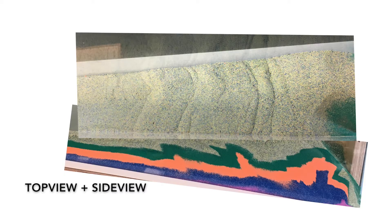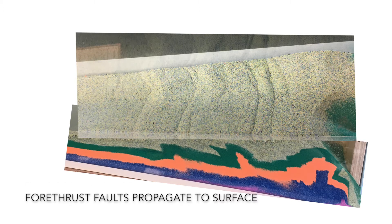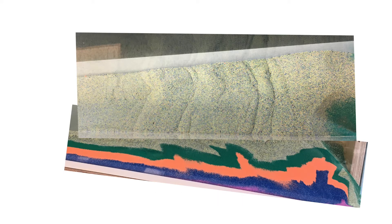However, the front and back of the sandbox are similar in that all four thrust faults propagate to the surface. We can match the bumps on the surface, when viewed from the top, to the four thrusts that propagate below.